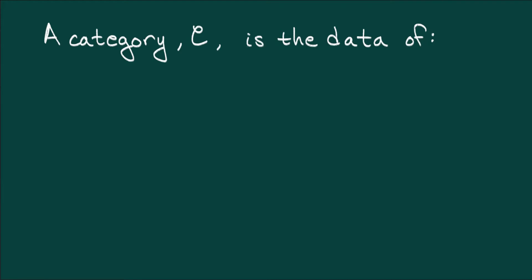The first piece of data in a category is a collection of objects. We'll depict these objects as dots. Someone in network theory might call these nodes. A geometrically-minded person would say point. I'll use the word object. Think object of interest. I'll adopt a point-set-looking notation of x in c, which is just shorthand for x as an object of c.